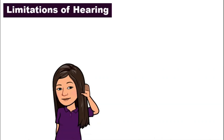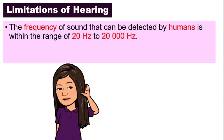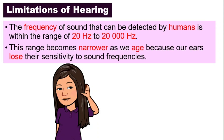Do you know that we have limitations in our hearing? The frequency that can be detected by the human ear is in the range of 20 to 20,000 hertz. Remember this figure — 20 to 20,000 hertz. And this range will actually become narrower as we age and grow older, because our ears will lose sensitivity.